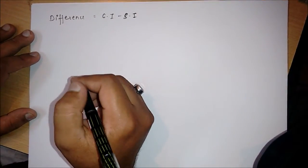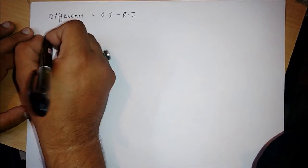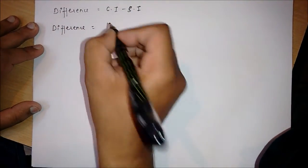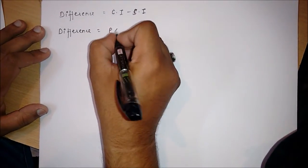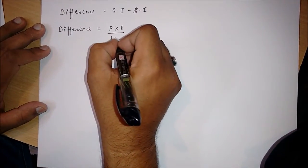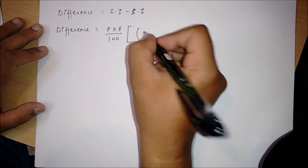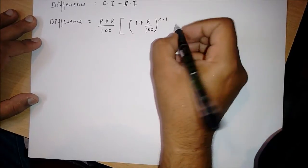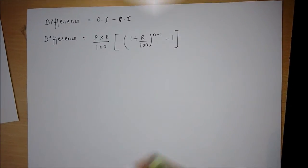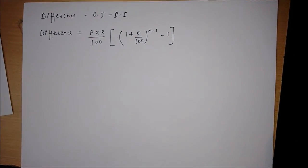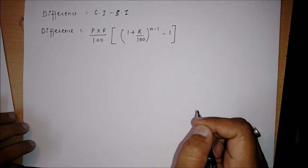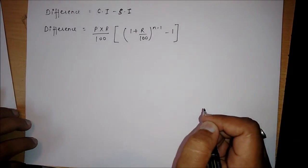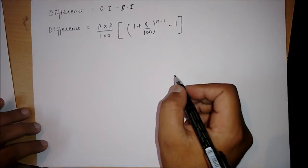But here we calculate the difference using a shortcut trick. We calculate the difference between compound interest and simple interest using a direct formula, where P is the principal, r is the rate of interest, and n is the value related to time. Let's have a numerical.